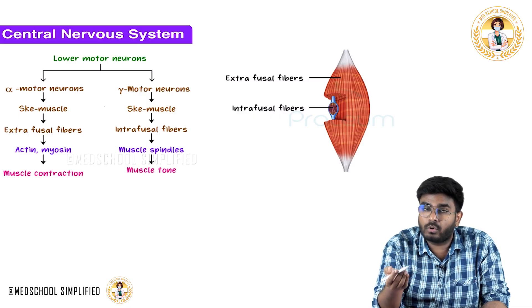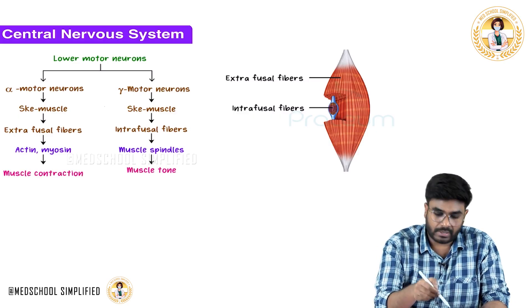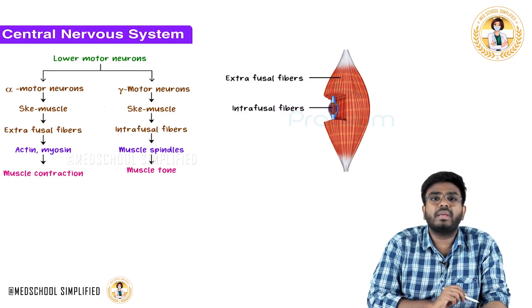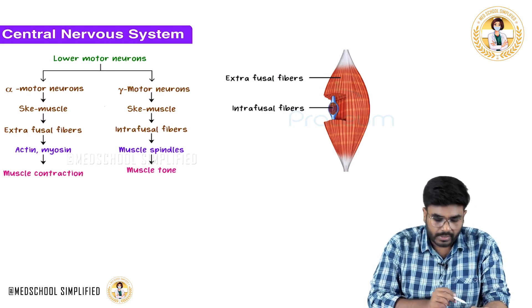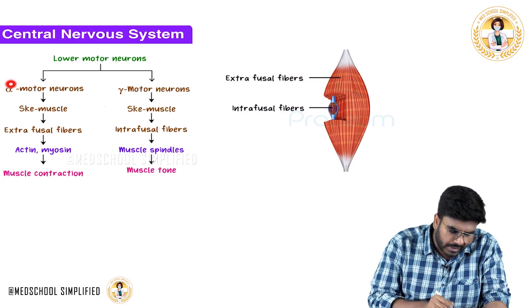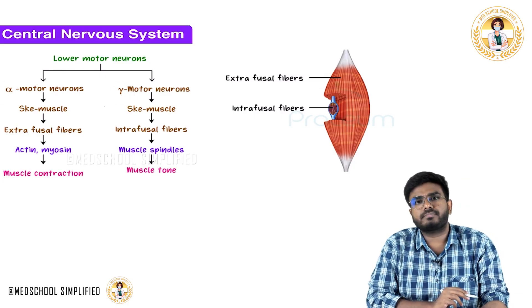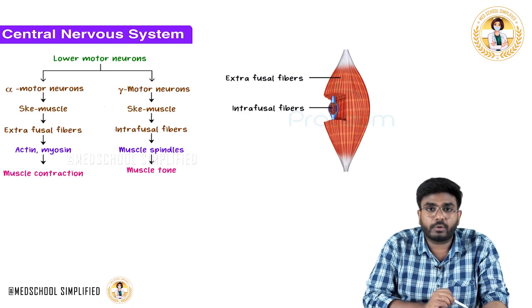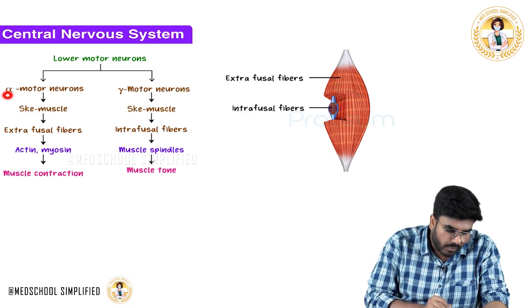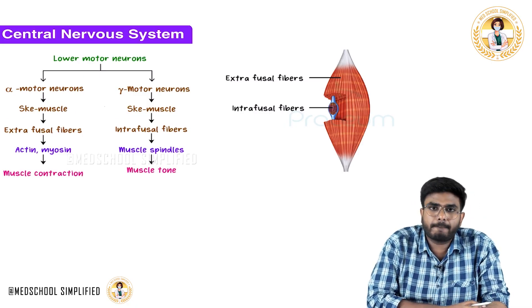Lower motor neurons are of mainly two types, both originating from the ventral horn. They are divided into alpha motor neurons and gamma motor neurons. Both alpha motor neurons and gamma motor neurons go to the skeletal muscle.